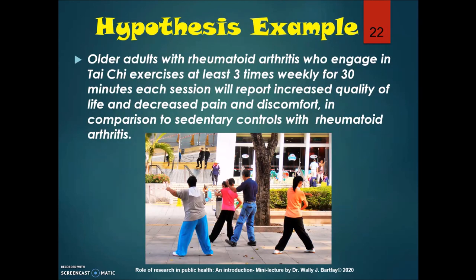Here is an example of a hypothesis: older adults with rheumatoid arthritis who engage in Tai Chi exercises at least three times weekly for 30 minutes each session will report increased quality of life and decreased pain and discomfort in comparison to sedentary controls with rheumatoid arthritis. We are making a prediction about the benefits of Tai Chi in terms of pain, discomfort, and quality of life measures, using a comparison group, with data collected and analyzed using various statistical procedures.